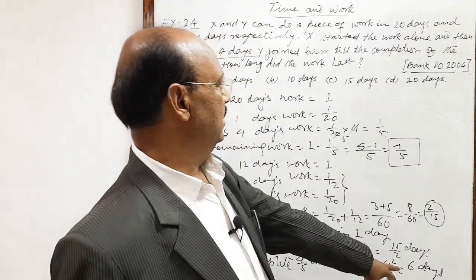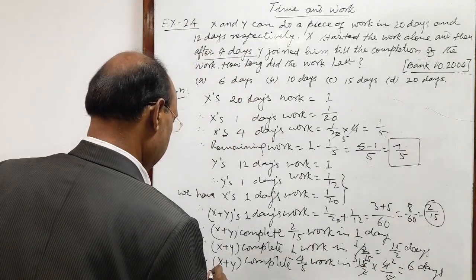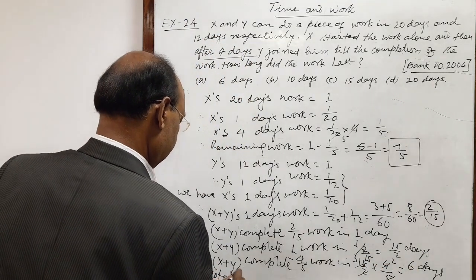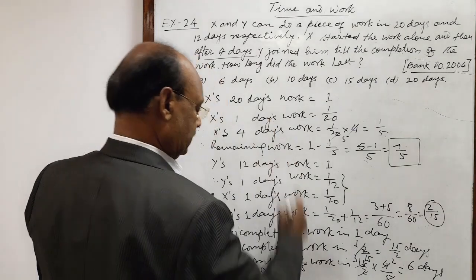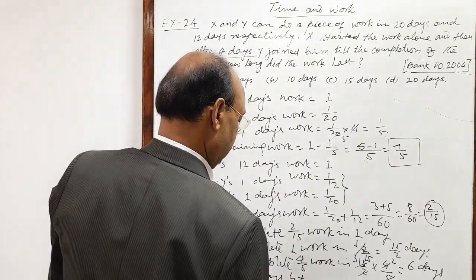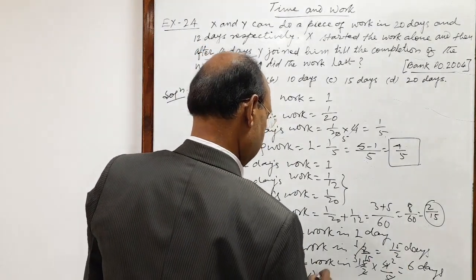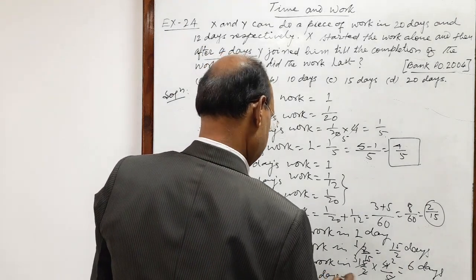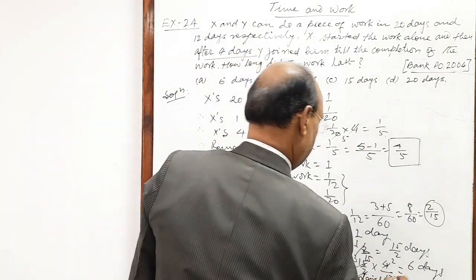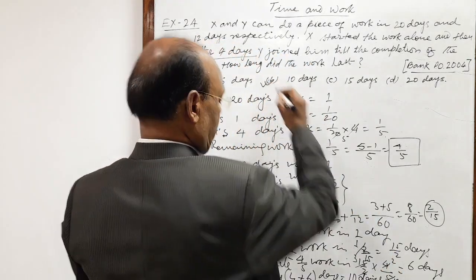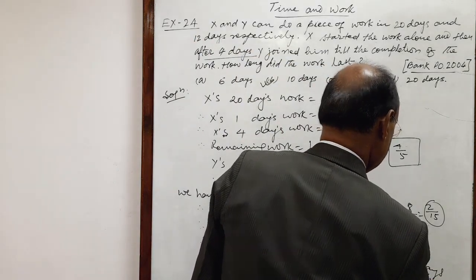X has worked 4 days alone, and X and Y together worked 6 days. So the total number of days is 4 + 6 = 10 days. This is the answer. Answer is option B: 10 days.